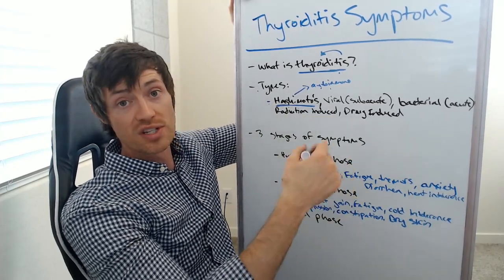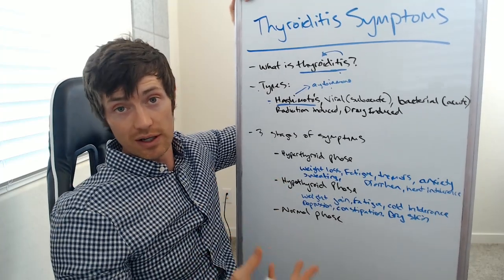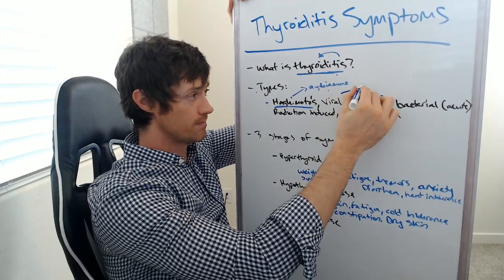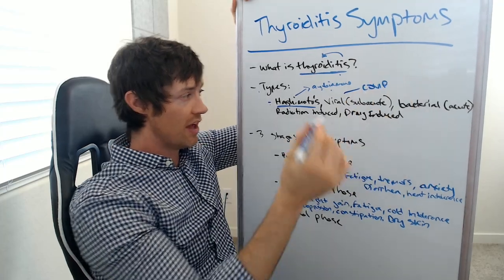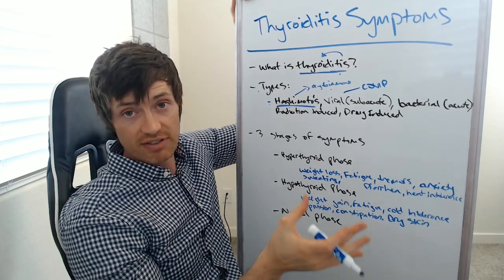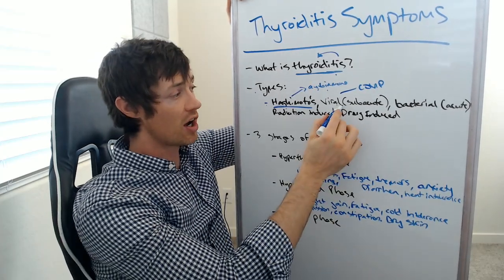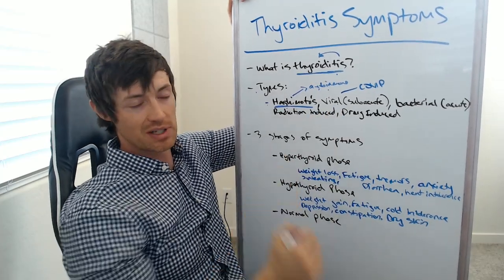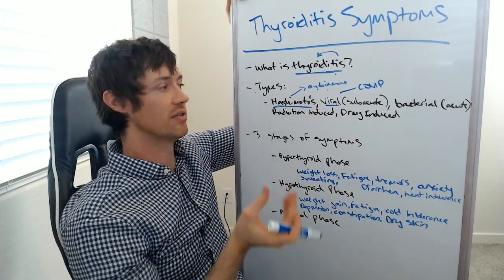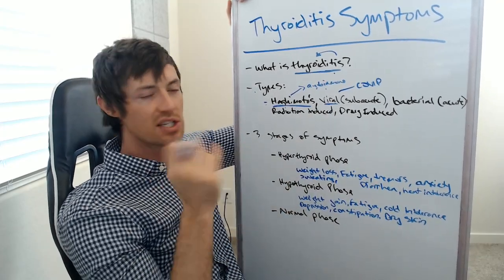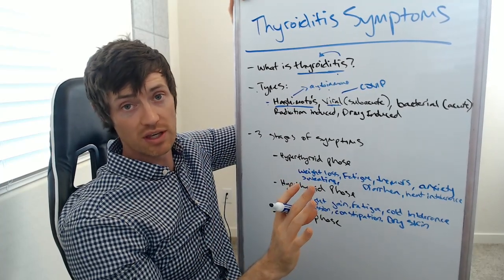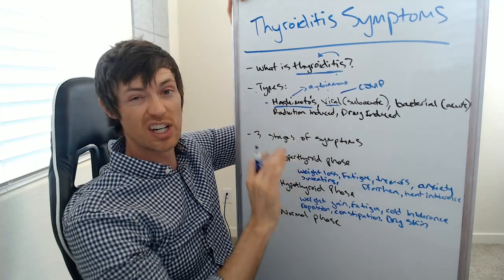Another type is called viral or subacute thyroiditis. This is one that's going to play a big role in a lot of people's lives because of COVID. That virus can cause inflammation in the thyroid gland as a post-infectious problem. It can cause symptoms we'll be talking about in just a minute, and it's related to the viral infection of the gland — the virus can get inside the gland or stir up the immune system to cause problems with the thyroid gland.